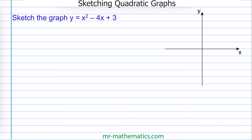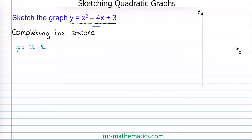The first thing we need to do is to write this equation in completed the square form. To do this we need to have the coefficient of x, which is negative 4. So we have y is equal to x minus 2 squared, and when we expand these brackets we get an unwanted 4 term, which is negative 2 squared. So we take away this 4 and we add back the 3.